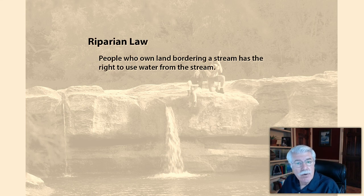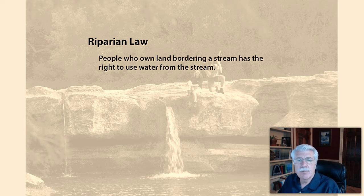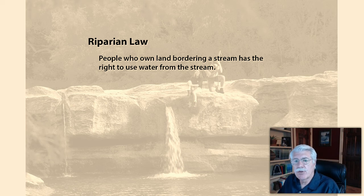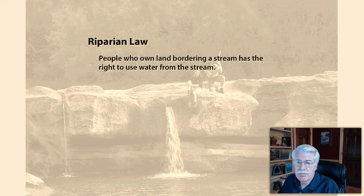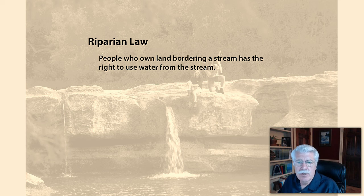Anglo-American settlers who moved into Texas in the early 1800s brought with them a different system of granting rights to water called riparian law. This gives people who own land bordering streams the right to use water from the stream. It's based on English law and reflects conditions in England where, very much unlike in Texas, water was plentiful and there were many streams everywhere.